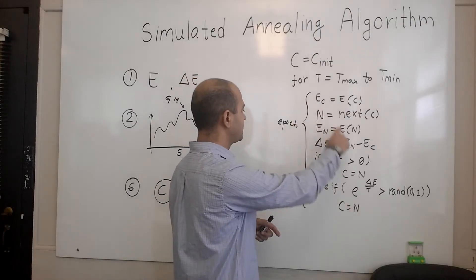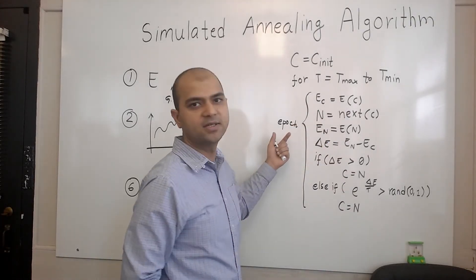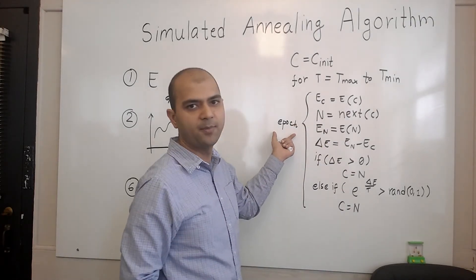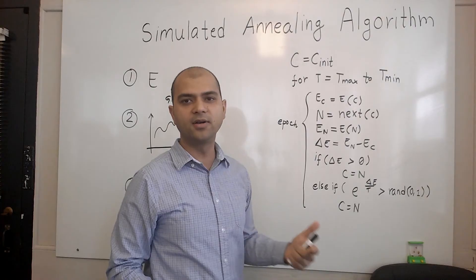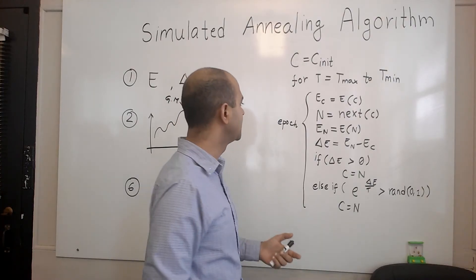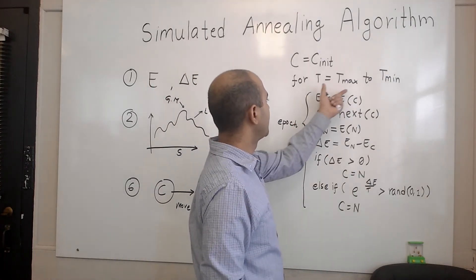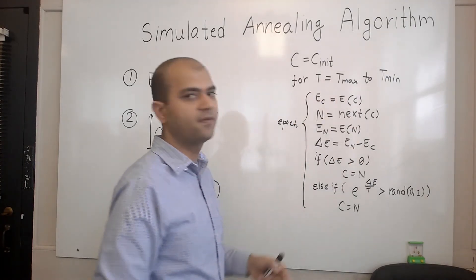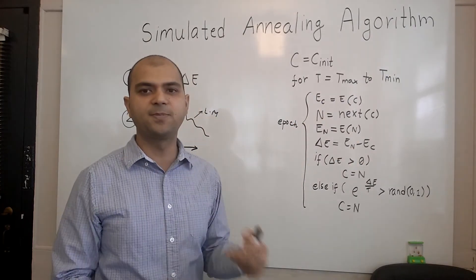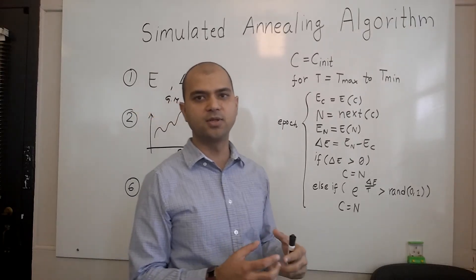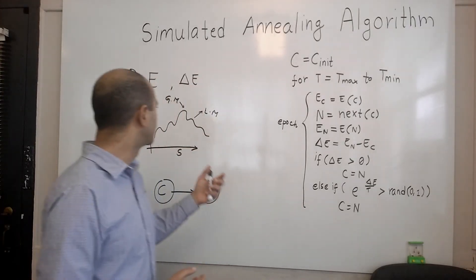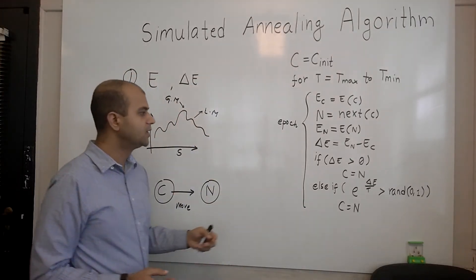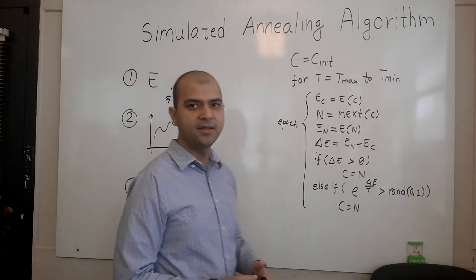We repeat the process for a certain number of times, usually known as the number of epochs — typically 100 to 200 times. For every value of temperature, we repeat the process, finally expecting the solution to converge towards the global minimum. That's the idea behind the algorithm.